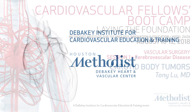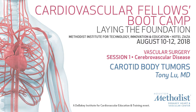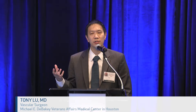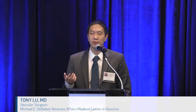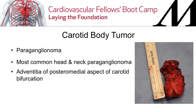Our last speaker is Dr. Tony Liu, who will be speaking on carotid body tumors. Carotid body tumors are a type of paraganglioma, part of the paraganglion system, which is derived from neuroendocrine-type tissues. They can be found in the cervical, thoracic, or abdominal cavities, although predominantly in the adrenal glands, and can involve either the sympathetic or parasympathetic systems. Carotid body tumors are the most common type of paraganglioma found in the head and neck.